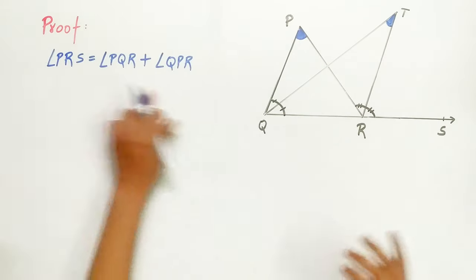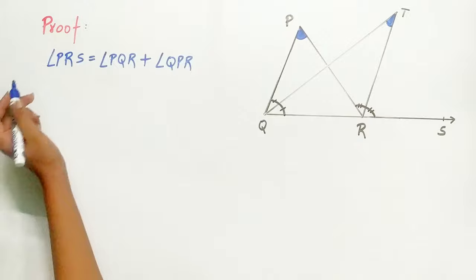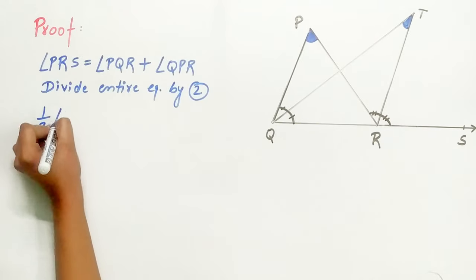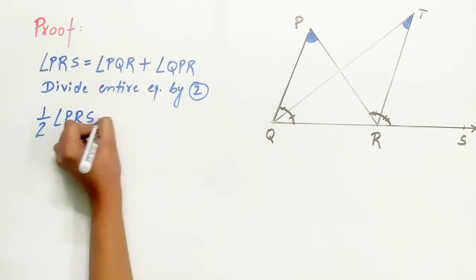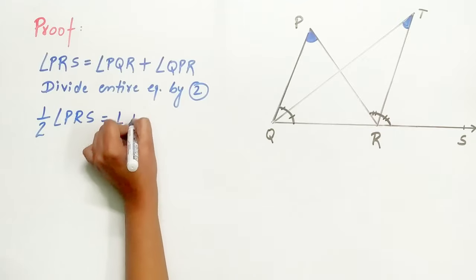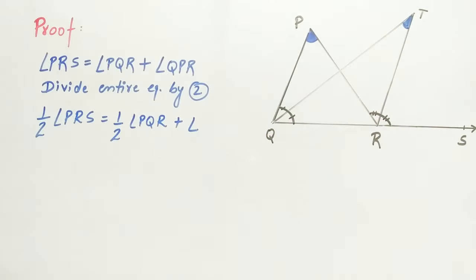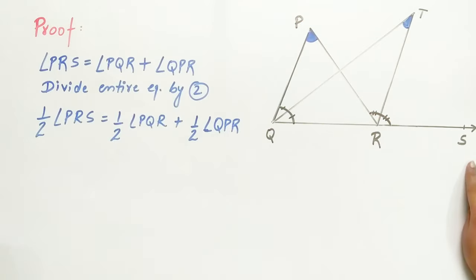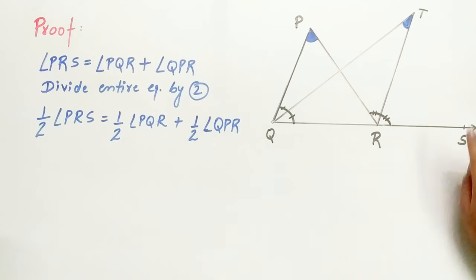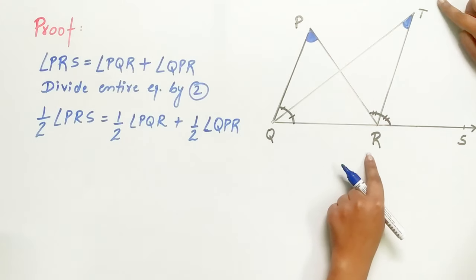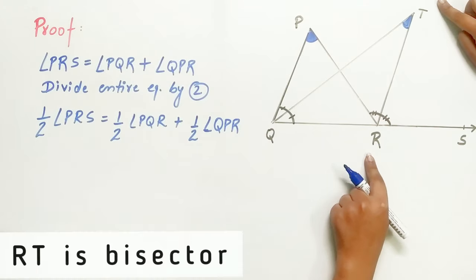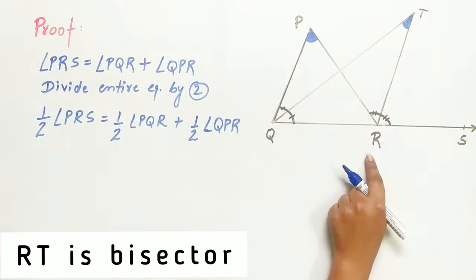Now, we will divide the entire equation by 2. Half of angle PRS equals half of angle PQR plus half of angle QPR. Half of angle PRS equals angle TRS because RT is a bisector of angle PRS.